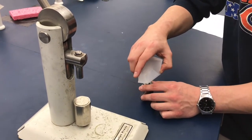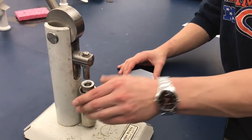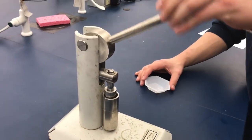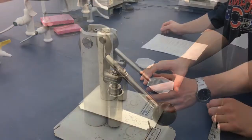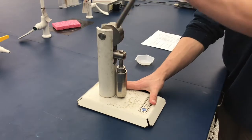Place the benzoic acid into tube number two and begin to push down on the lever of the pellet press. Release the lever and take out tube number two.